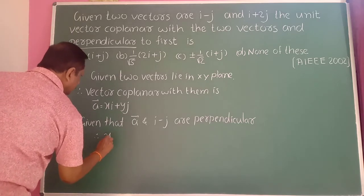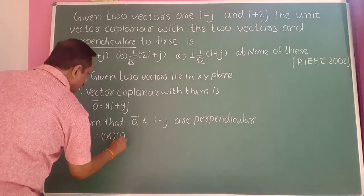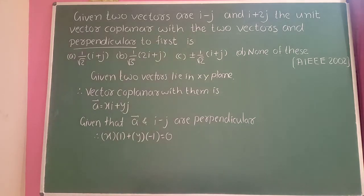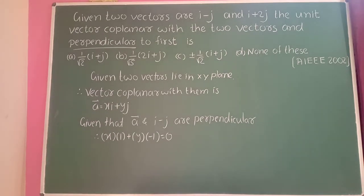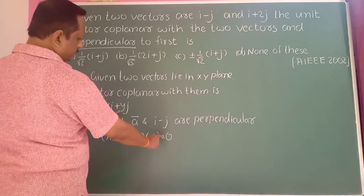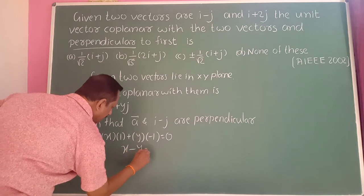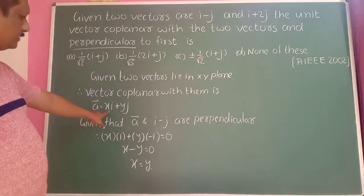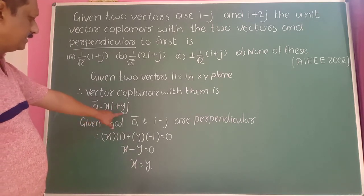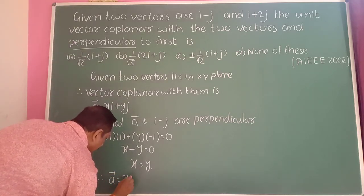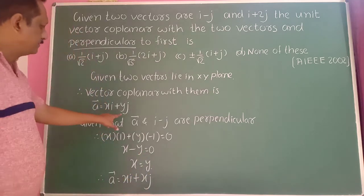Therefore x into 1 plus y into minus 1 equals zero, which gives x equals y. So a-bar becomes xi plus xj, replacing y by x since they are equal.